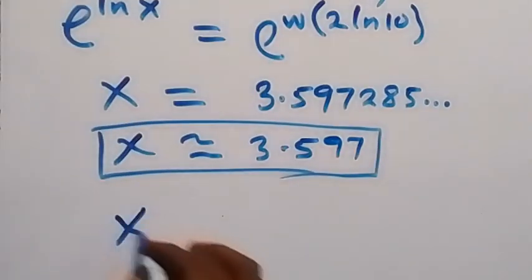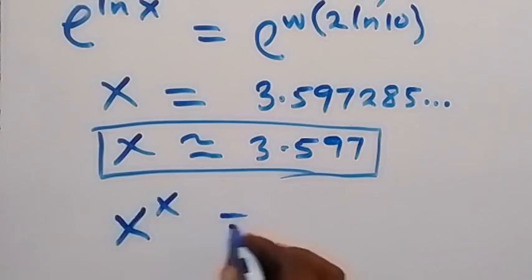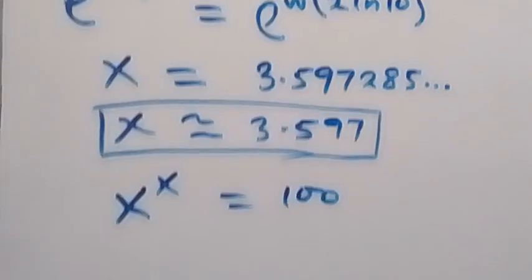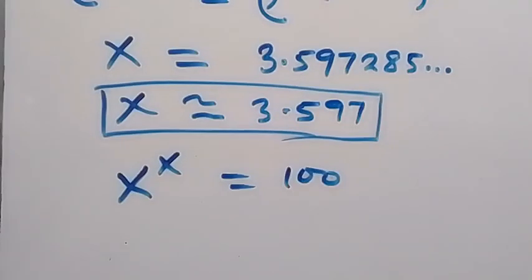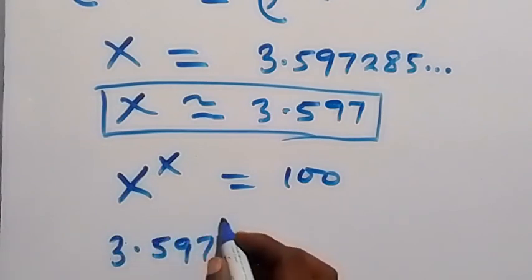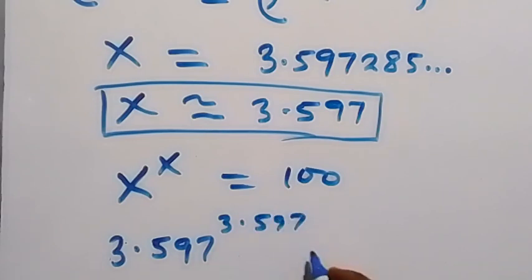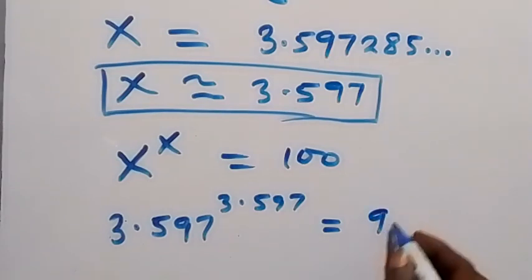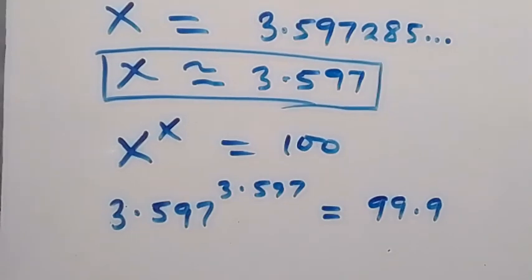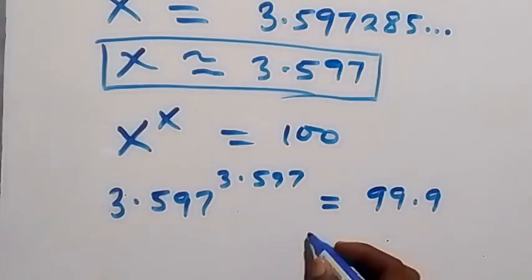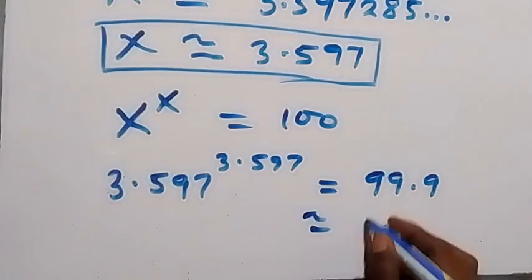Then to check, from what we are given, x raised to power x equals to 100. Now when we substitute the value of x in this, our given problem, we can even use this directly to check. Then we have 3.597 raised to power 3.597. When we press and we check this one, this will give us 99.9 to one decimal place. Here, that means we can approximate this and it will be 100 on this side.